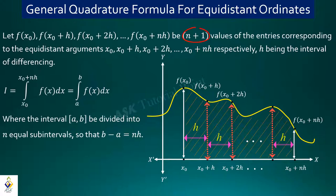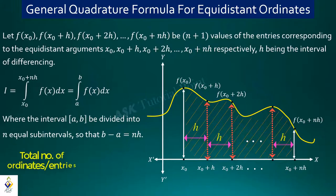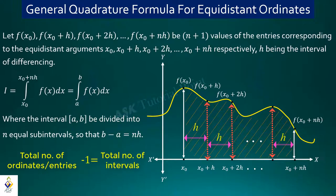The total number of ordinates is n+1, and the range is divided into n sub-intervals. The concept is: total number of ordinates minus 1 equals the total number of intervals. I will note this concept in the context of numerical integration.